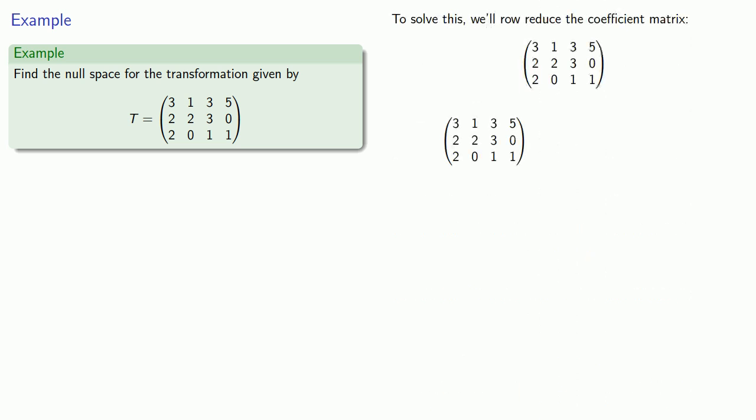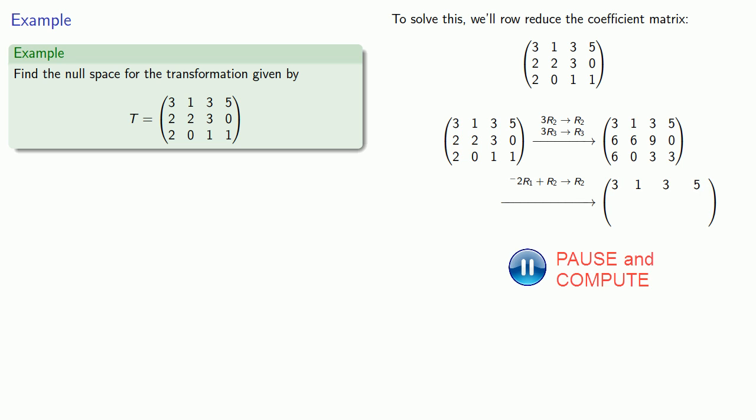Our first row pivot is 3, so we'll multiply the second and third rows by 3. Then we'll multiply the first row by negative 2 and add it to the second to get a zero below the pivot. Likewise, we'll multiply the first row by negative 2 and add it to the third to get a zero below the pivot.